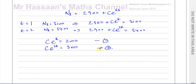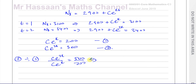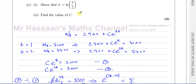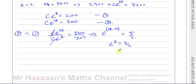We can eliminate c by dividing equation 2 by equation 1: (c e to the power of 2k) divided by (c e to the power of k) equals 500 over 200. The c's cancel, and dividing the same base means subtracting powers, so e to the power of (2k minus k) equals 5/2, giving e to the power of k equals 5/2. Taking ln of both sides, k equals ln(5/2), which is what we had to show.